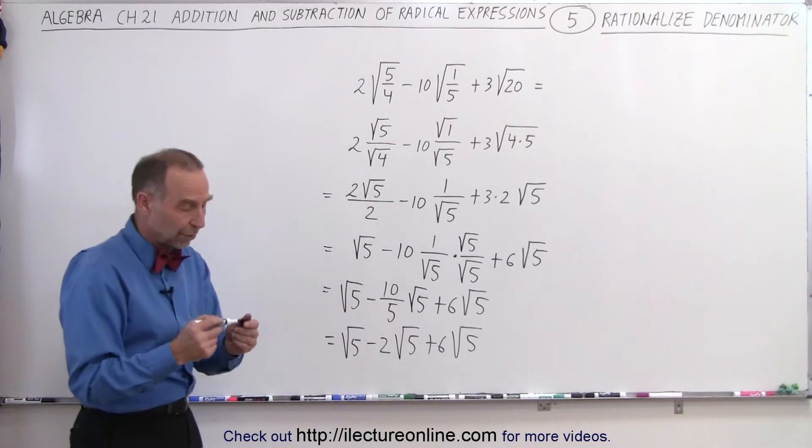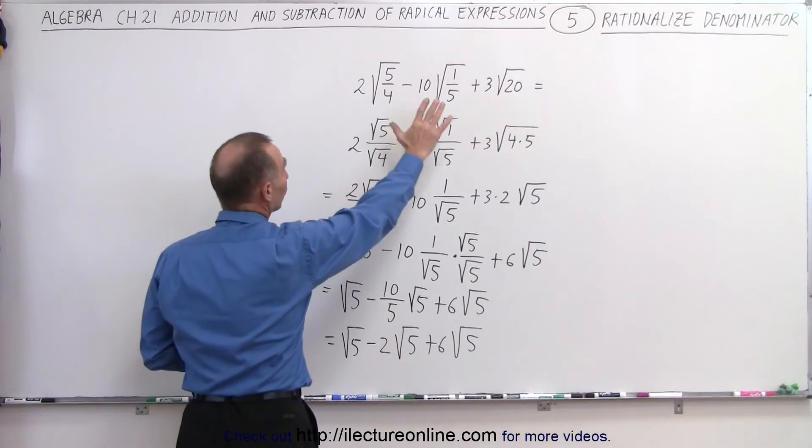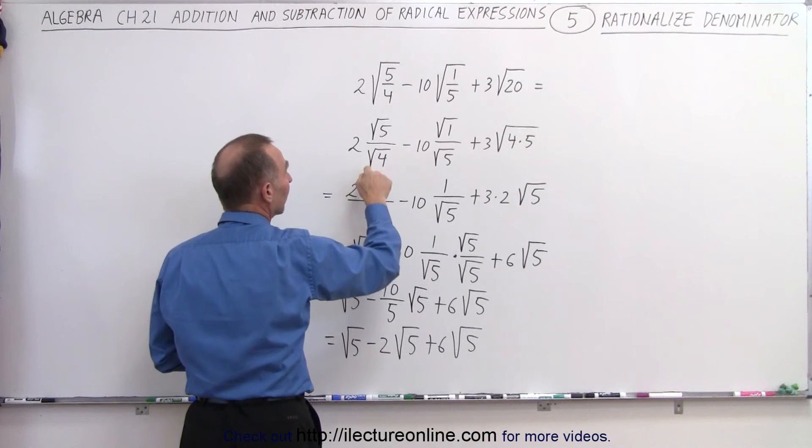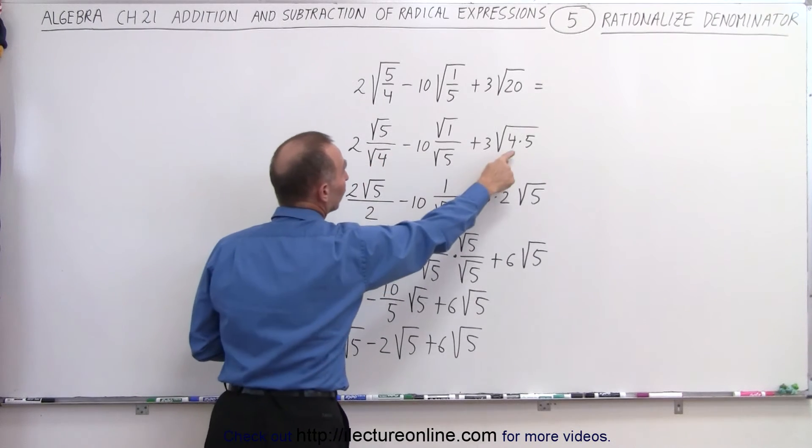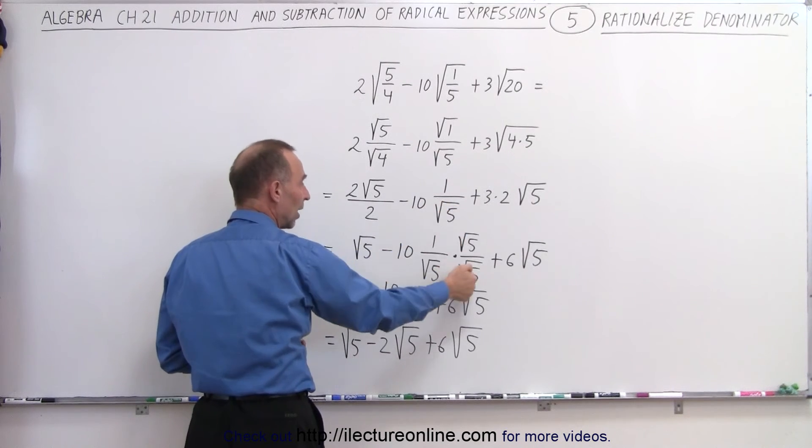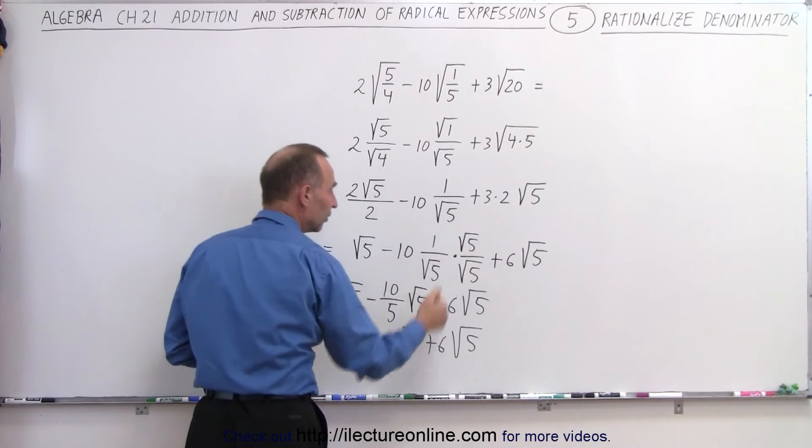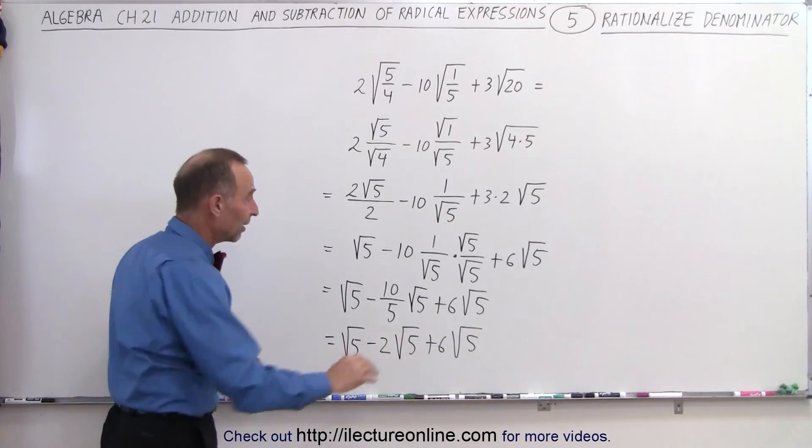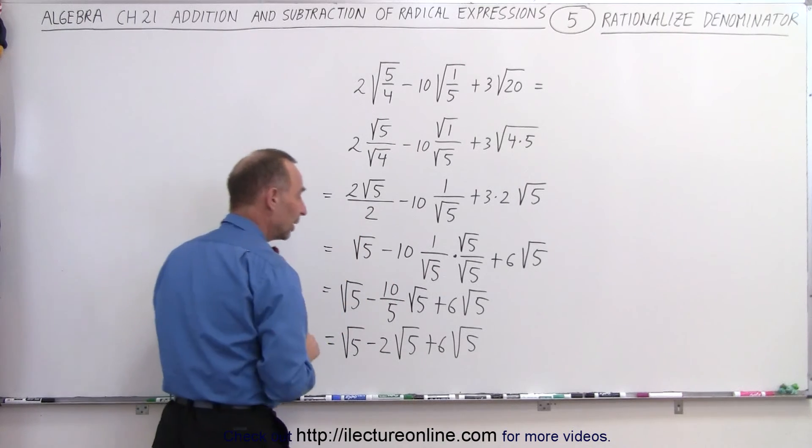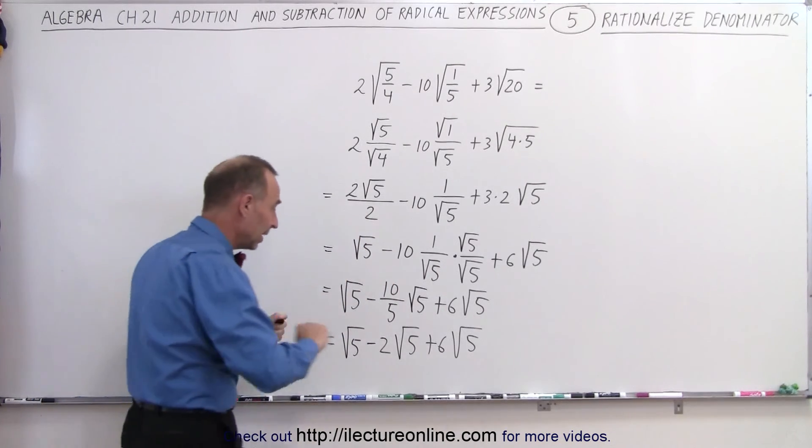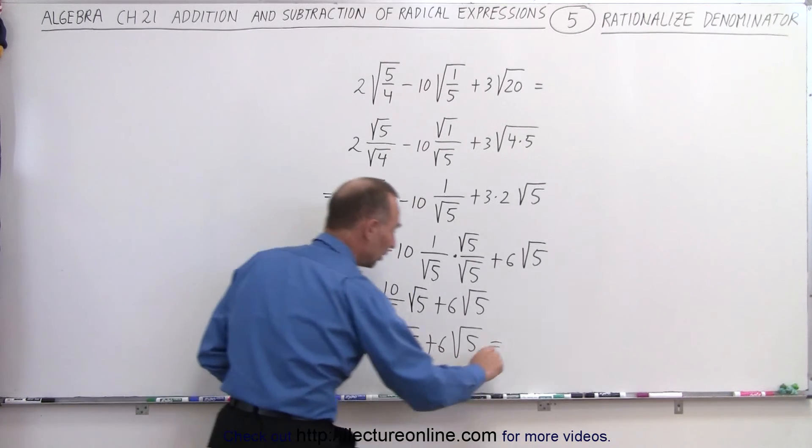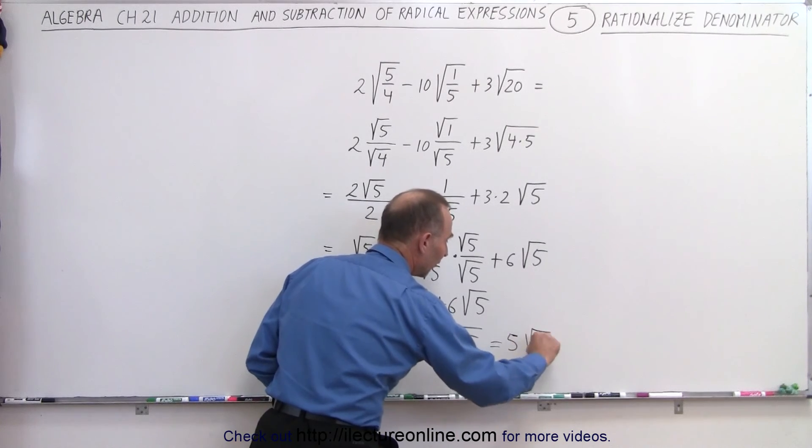And finally, after we did what? We first wrote in a way where we can factor out, or at least write some of these as whole numbers rather than radicals, the square root of 4 and the square root of 4, that becomes 2 and 2. And here we can see that to get rid of the square root of 5 in the denominator, we multiply both the top and the bottom, the numerator and the denominator, by the square root of 5 to get rid of the radical in the denominator. And then when we look at it, we have every term that contains the square root of 5. So now we can simply add and subtract them. So we have 1 plus 6 is 7 minus 2 gives you 5 times the square root of 5.